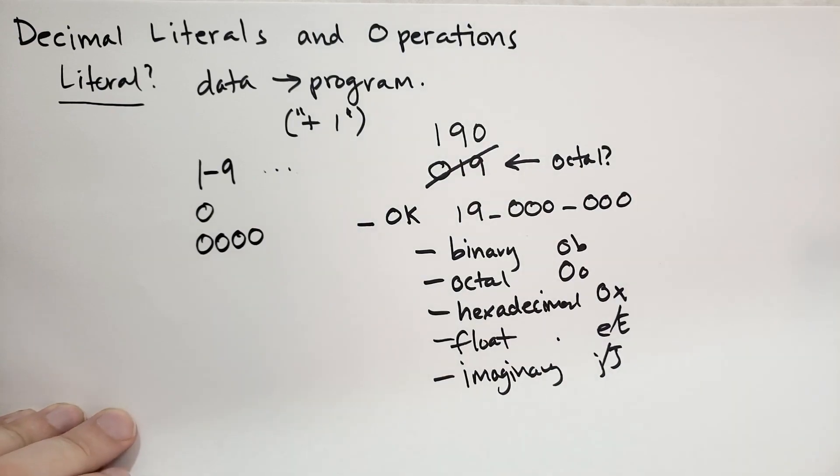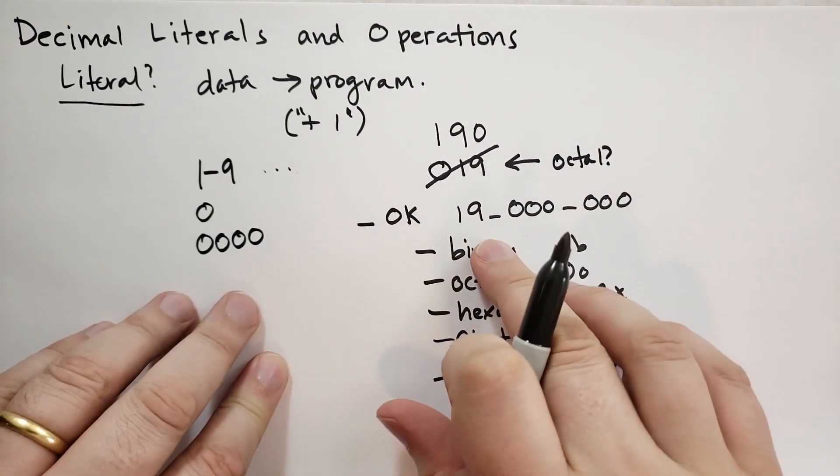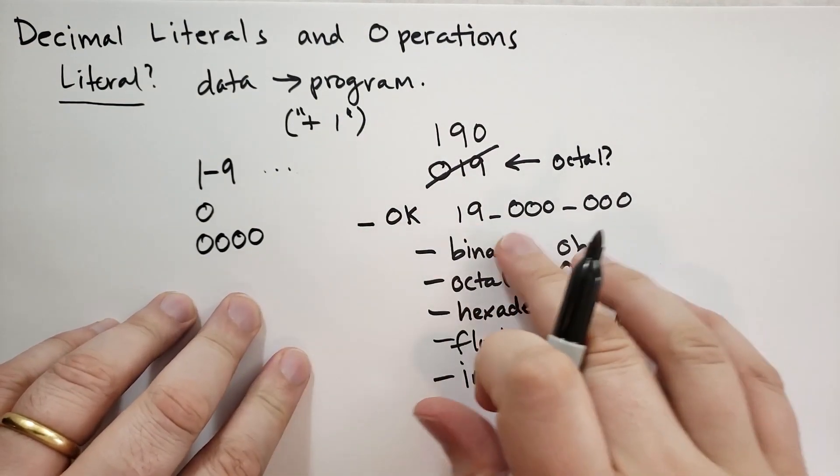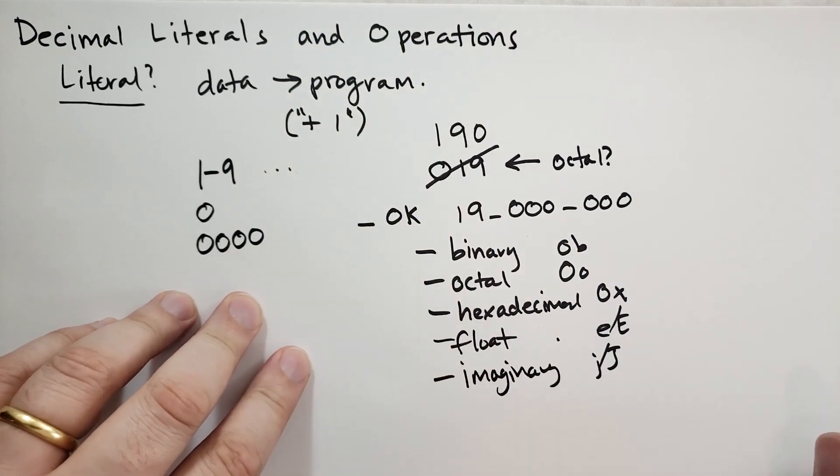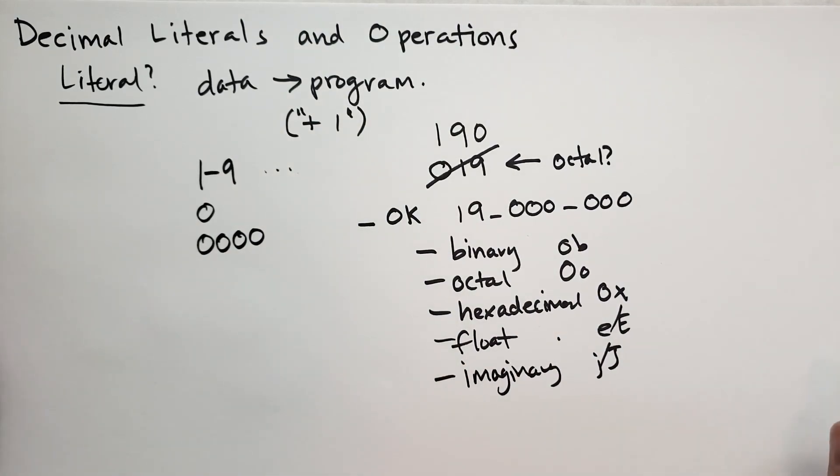What can you do with decimals? Well, Python is going to take the decimal number and store it in a binary format as an integer. Integers are really fundamental to computer science, as they are to mathematics as well.